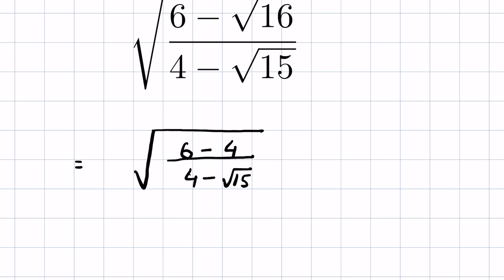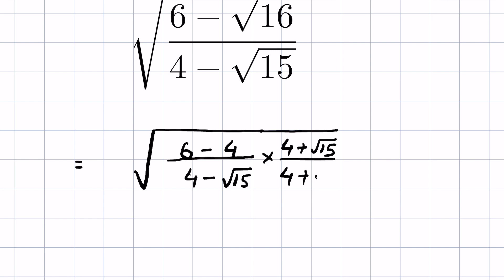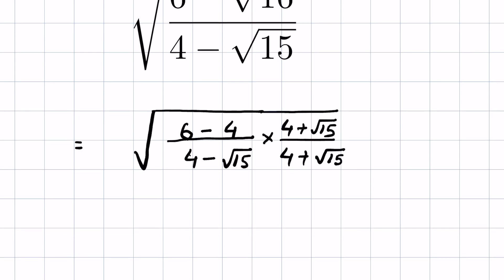To remove the square root from the denominator, multiply both the numerator and denominator by the conjugate: (4 plus square root of 15). Multiplying by the same expression top and bottom doesn't change the value of the fraction, and the denominator terms will combine using the difference of squares identity.